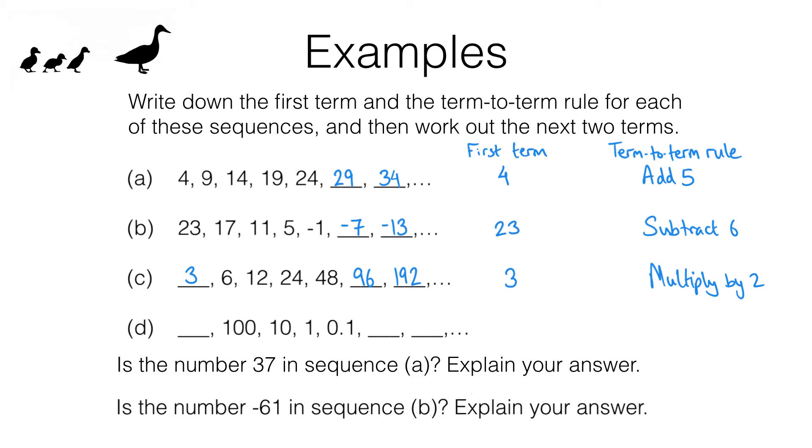Pause the video and have a go at question D. Here's what you should have found. We are dividing by 10 from one term to the next so that's our term-to-term rule. We are dividing by 10, and that's going to give us 0.001. Working backwards you'll see we are multiplying by 10. So this first term will be 100 times 10 and that's 1000. So the first term of this sequence is 1000.